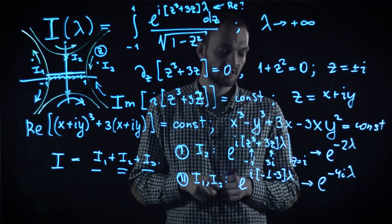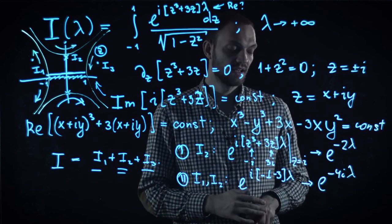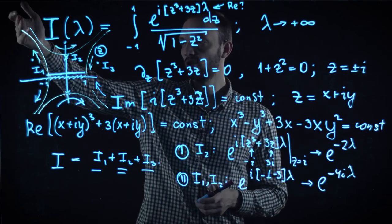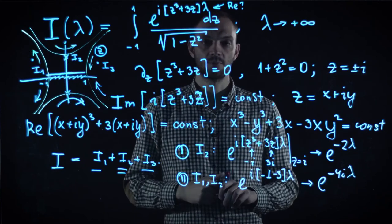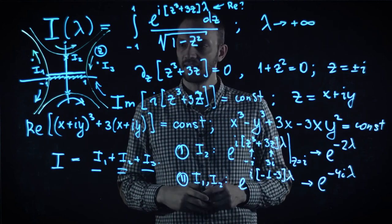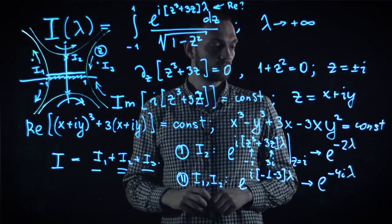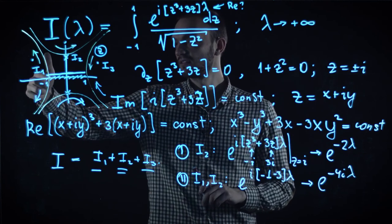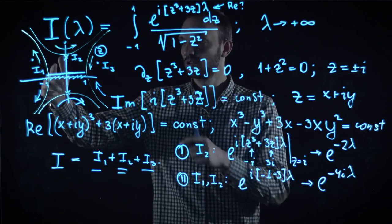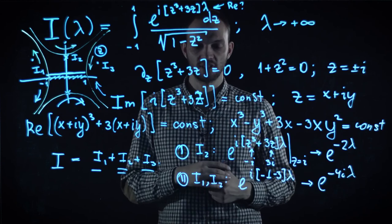But this dependence is simply oscillating one. And again, full evaluation along this line will give us some power law pre-factor. But already, on this level, we see that in this situation, we have to conclude that this segment, i2, contributes exponentially small term. And this contributes something which doesn't have any exponential smallness. So, obviously, we need to concentrate on the evaluation of these two segments. So, let's proceed with that.